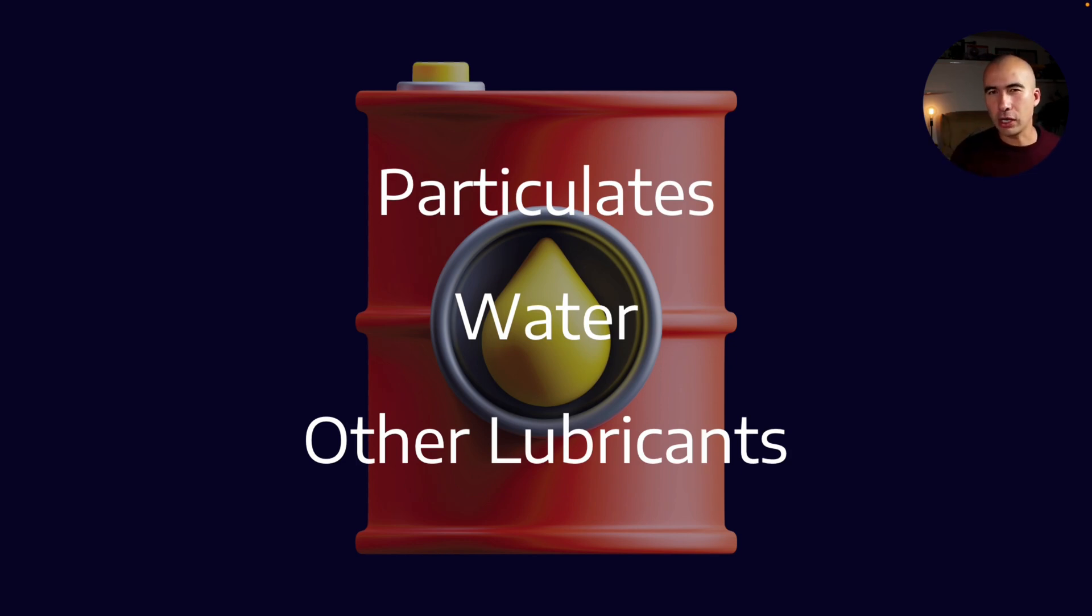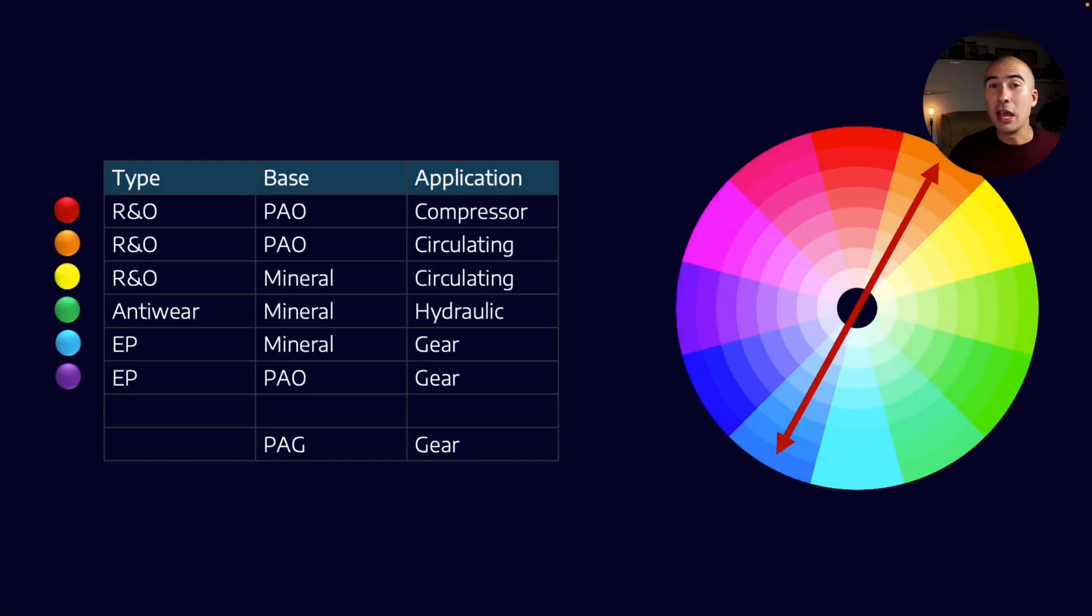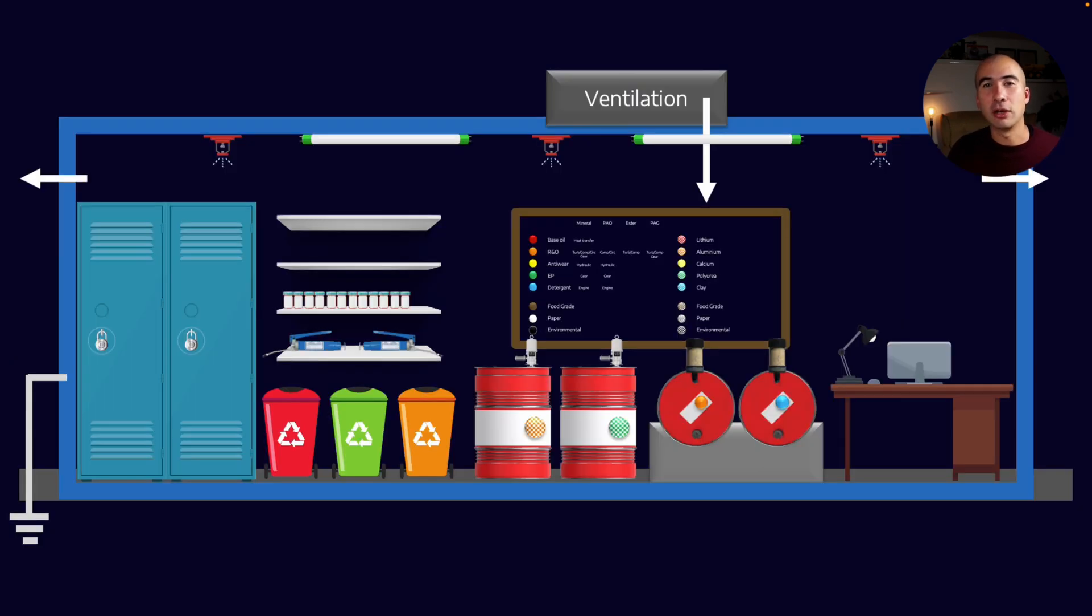And this is really a matter of educating your workforce that not all lubricants are the same. Now I actually have a separate video on how to do color-coded tags, but a tagging program is one of the easiest ways to make lubricant top-ups more or less idiot-proof. And it doesn't need to be some kind of radically complex system.